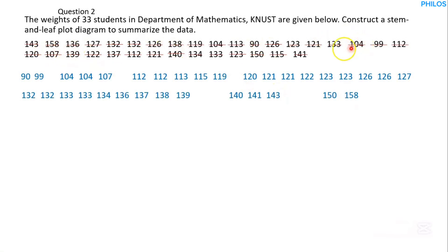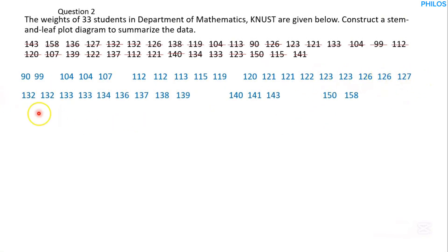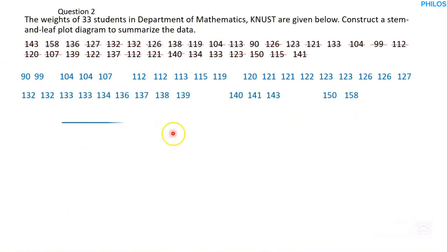Check that everything is marked. If any value was missed, you can still insert it in the correct place. Now count all values to confirm there are 33: 1, 2, 3 ... 33. Draw a horizontal line and one vertical line to create the stem and leaf table.